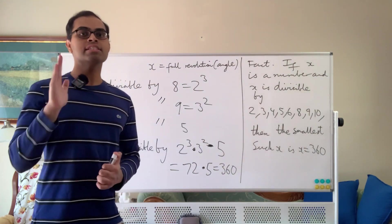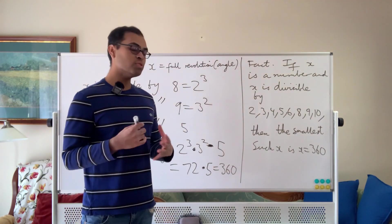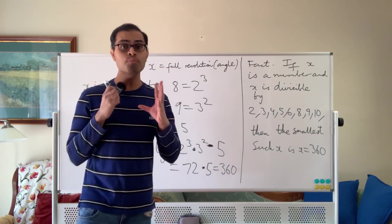Again, because you guessed it, 7 is a prime number. So 7 times 360 is already going to be 2,520, which is too big to handle.